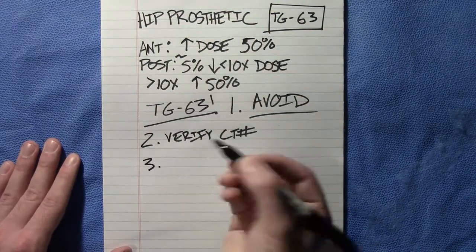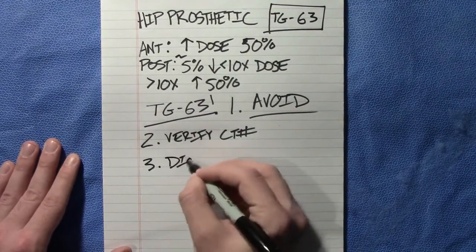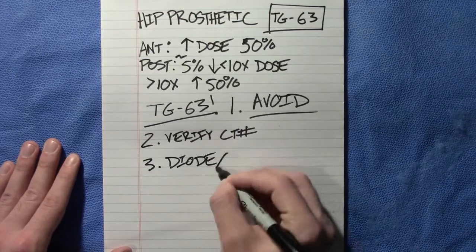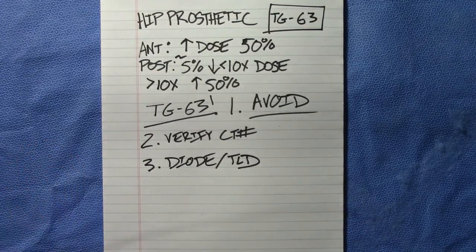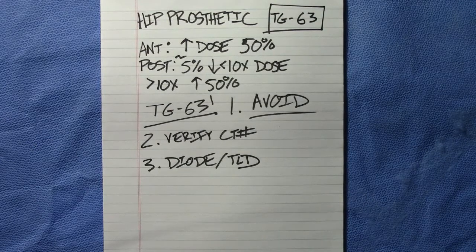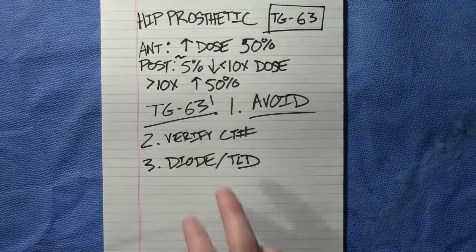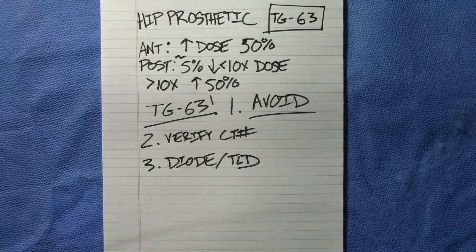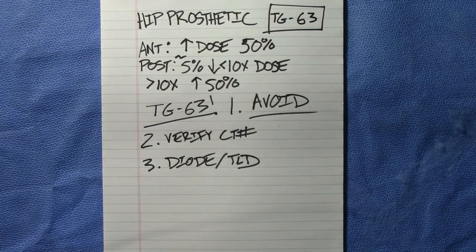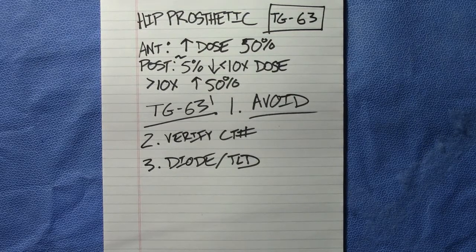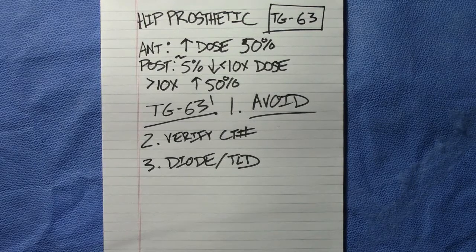Third, you could use a diode or a TLD for in vivo dosimetry to verify what dose you are actually getting at the anterior and posterior portions of the body. You can place those on the patient on the day of treatment to really know what dose you're getting, just to verify your dose calculation and feel confident about what you're doing with that patient.